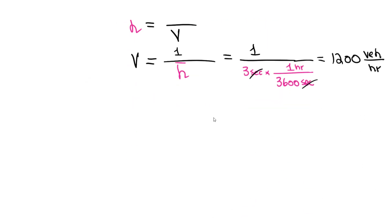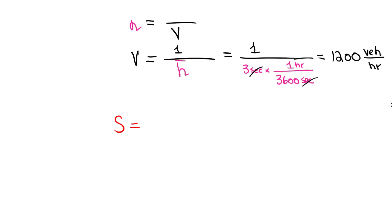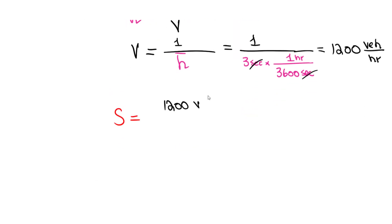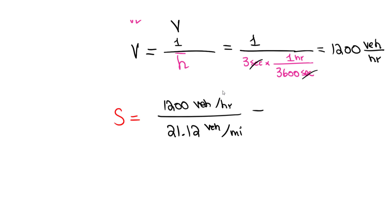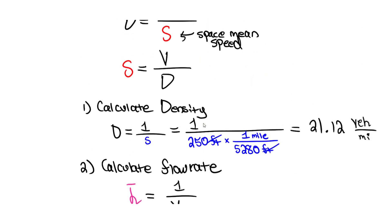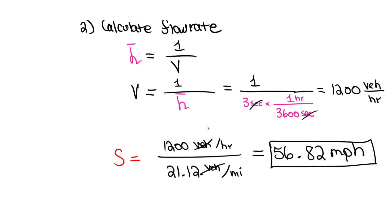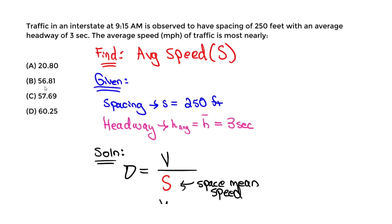Now we plug back in to solve for speed. Speed equals flow rate divided by density: 1,200 vehicles per hour divided by 21.12 vehicles per mile. The vehicles cancel, leaving miles per hour. That gives approximately 56.82 miles per hour. So the answer is most nearly 56.82 MPH — the closest answer choice should be B. Let me know if you have any questions, and thank you.